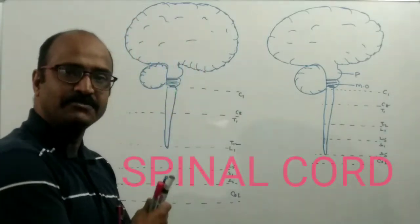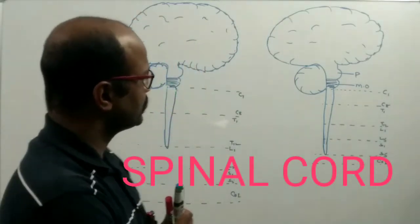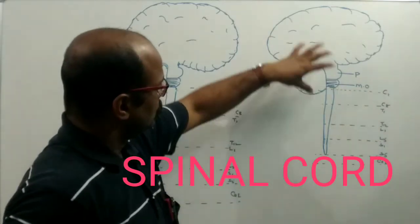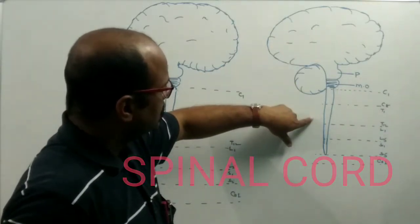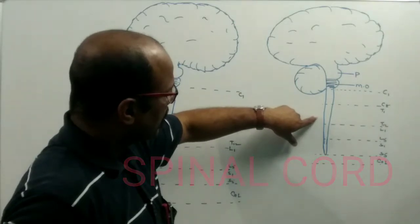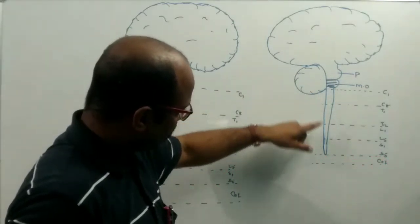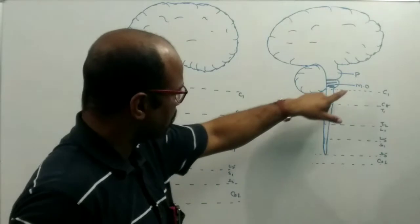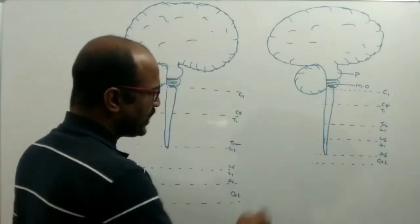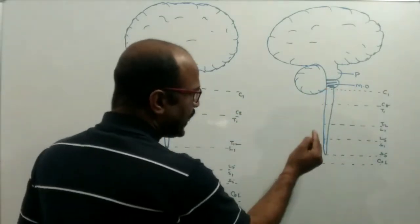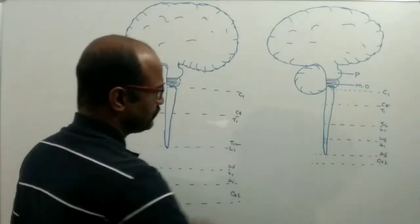As you all know, the spinal cord is one part of the central nervous system. This is the brain and this is the spinal cord. The spinal cord is elongated and cylindrical in structure, and extends from the medulla oblongata, descending downward.